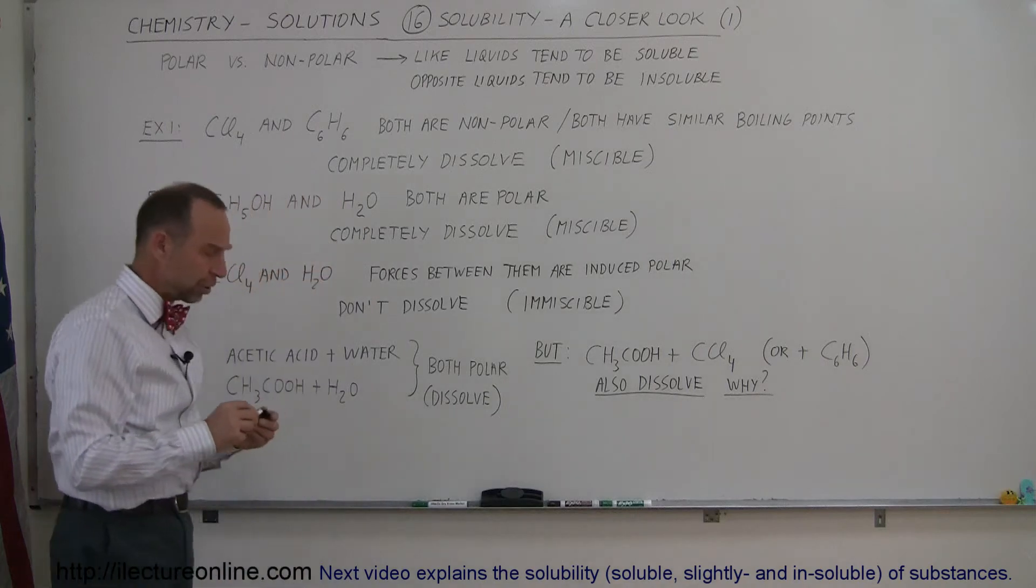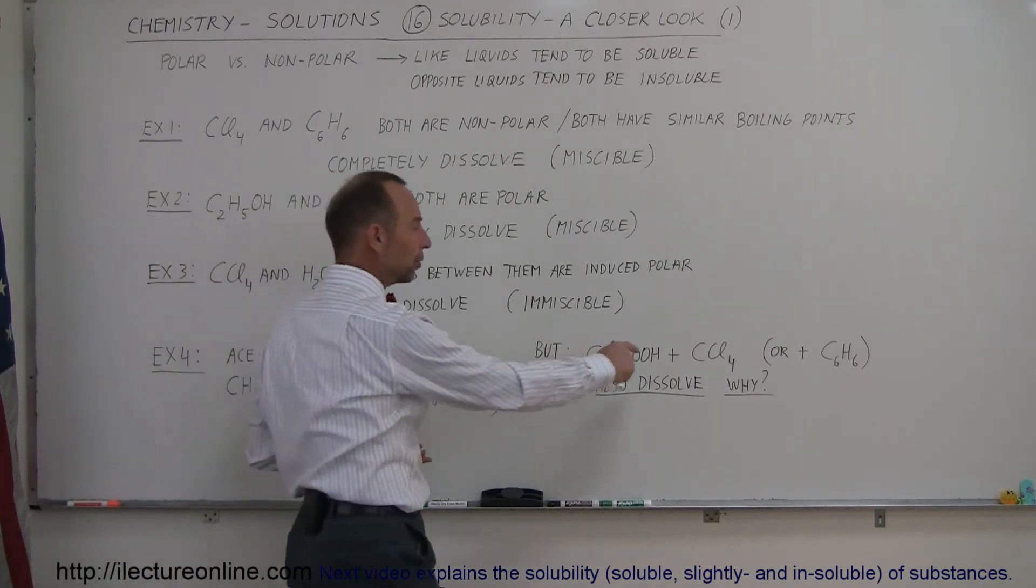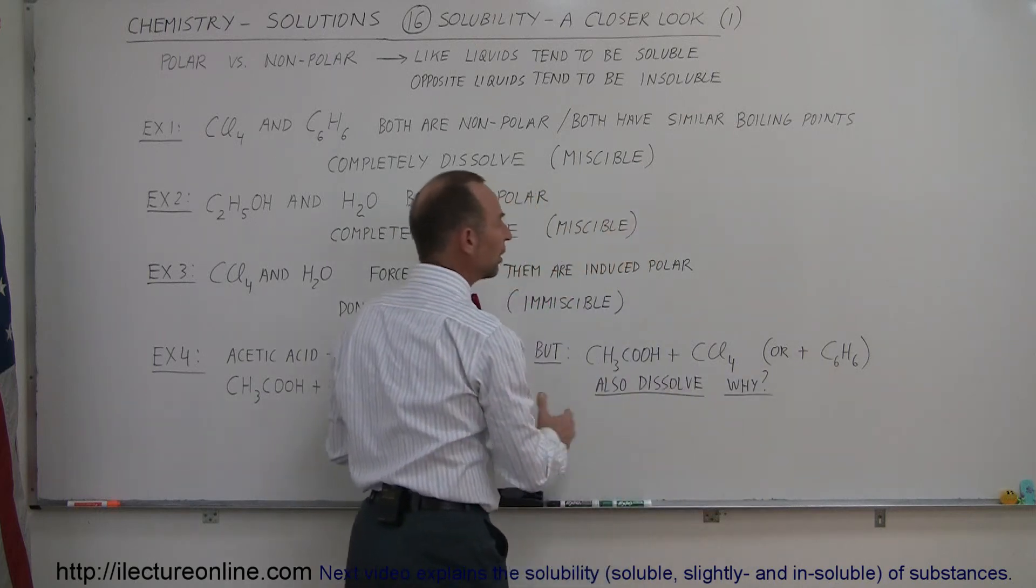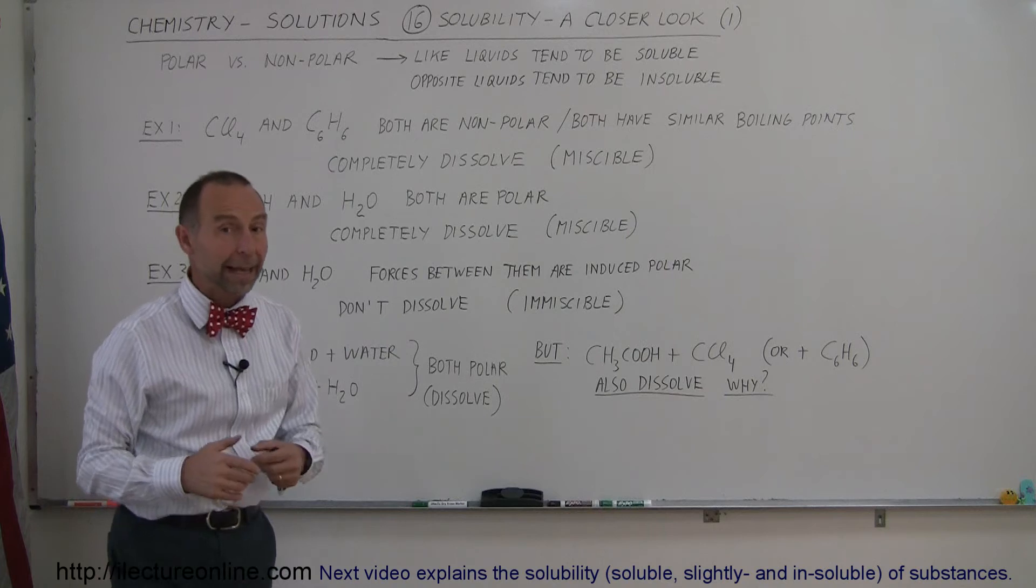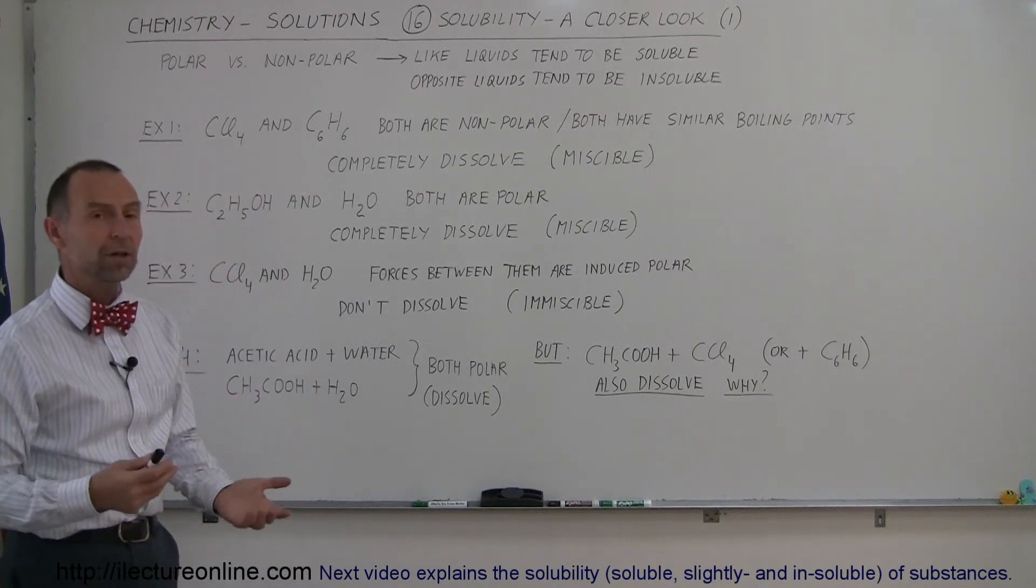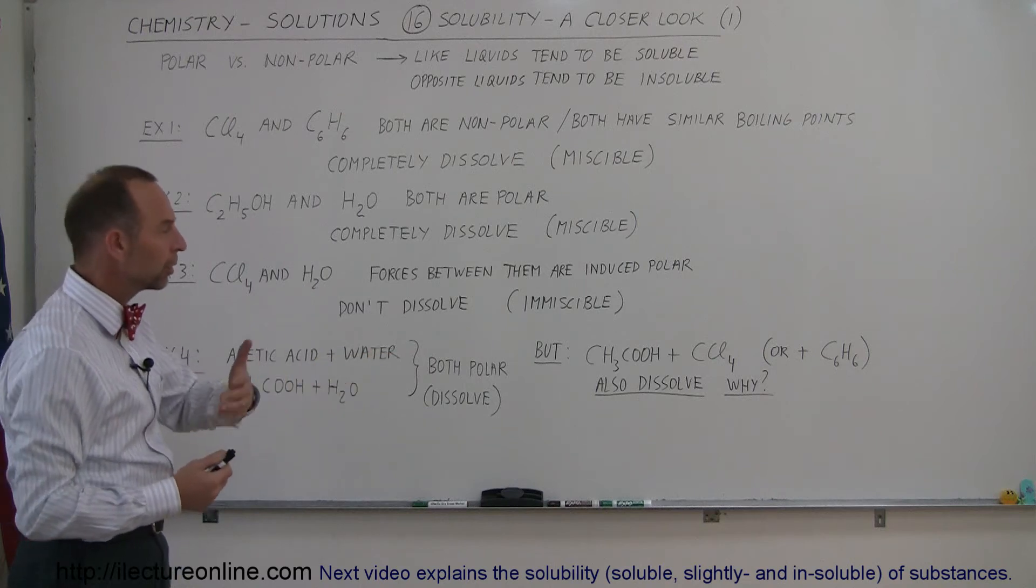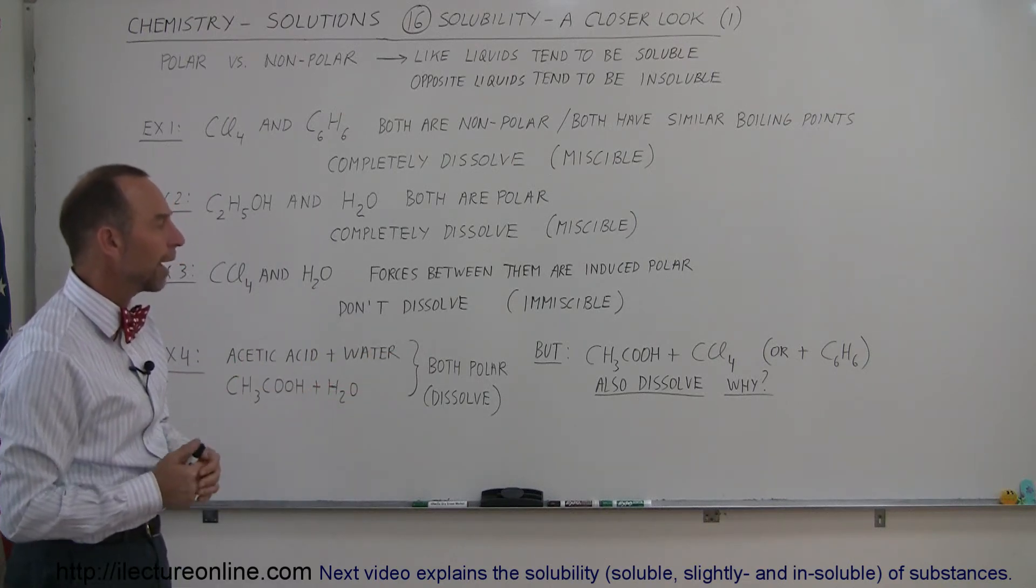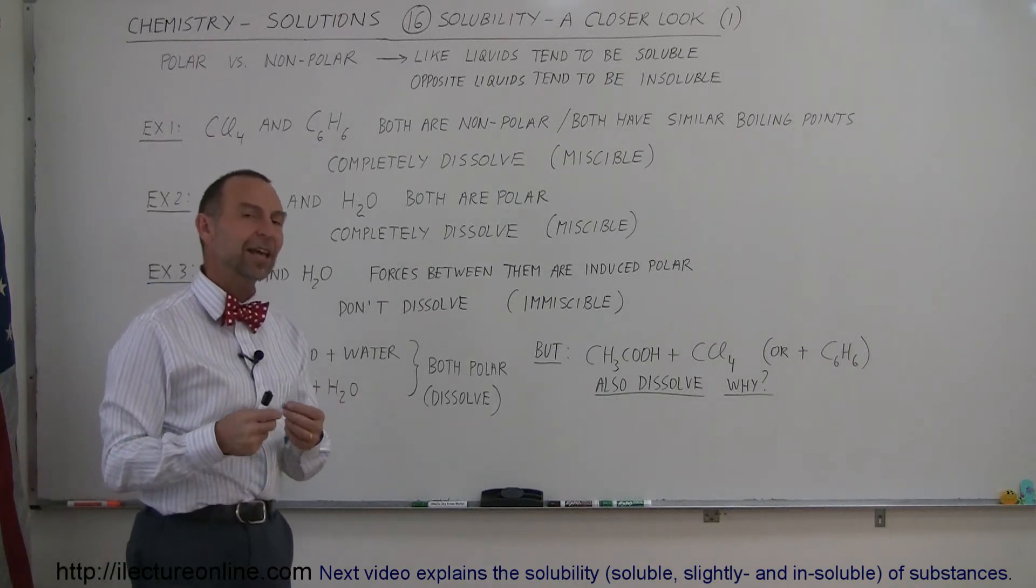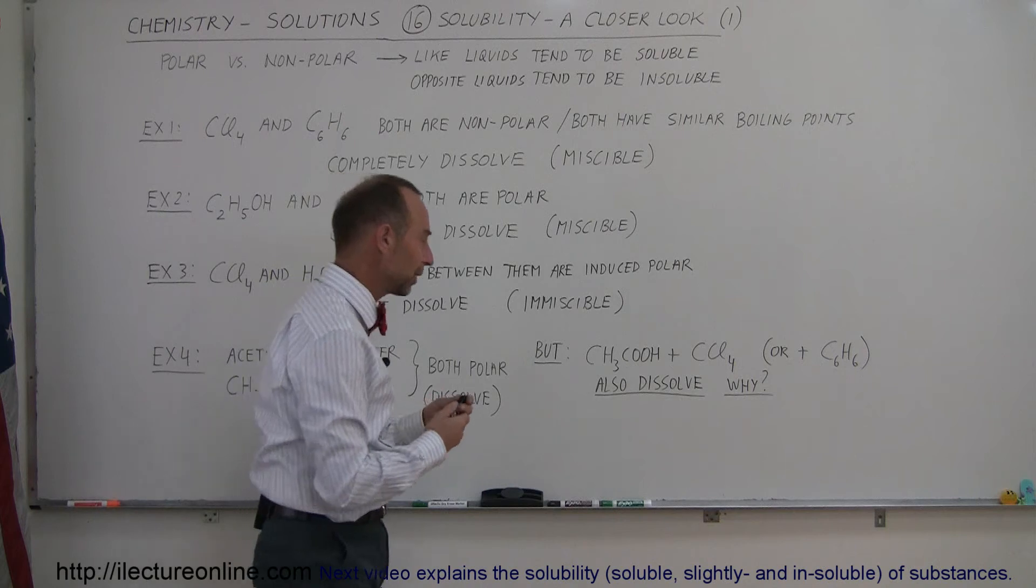They're both polar. But you can also take acetic acid and mix it with carbon tetrachloride or benzene, where these are non-polar molecules and acetic acid is polar. And again, they will dissolve. Now the big question is why. Something is different here. You have a polar molecule, a non-polar molecule, and they tend to dissolve. What is going on? It turns out that acetic acid has an interesting property—it can form what we call dimers. Let me show you what that looks like.